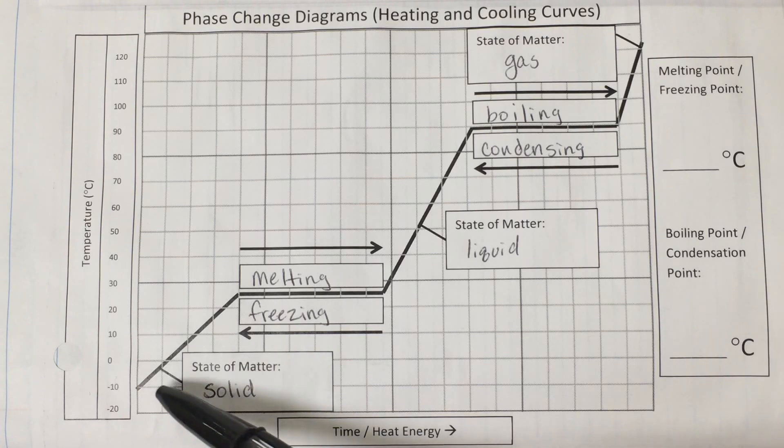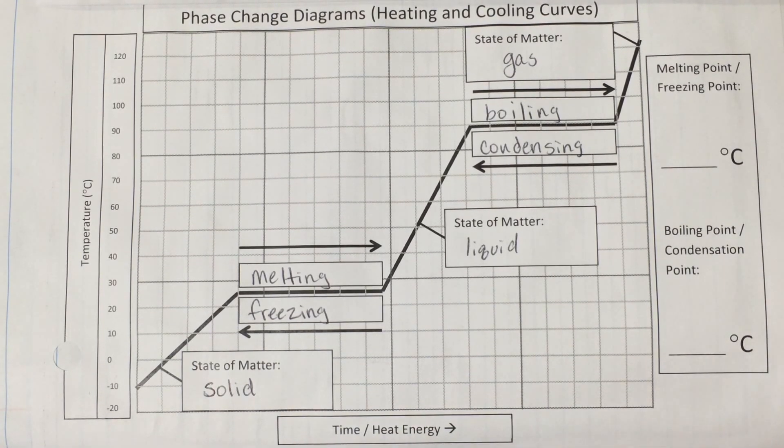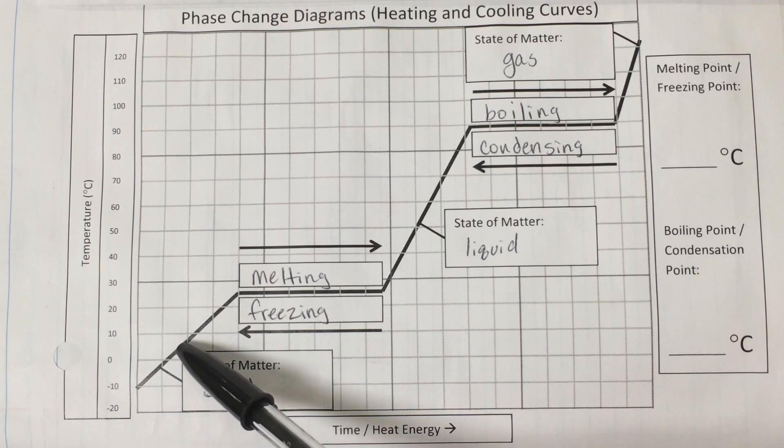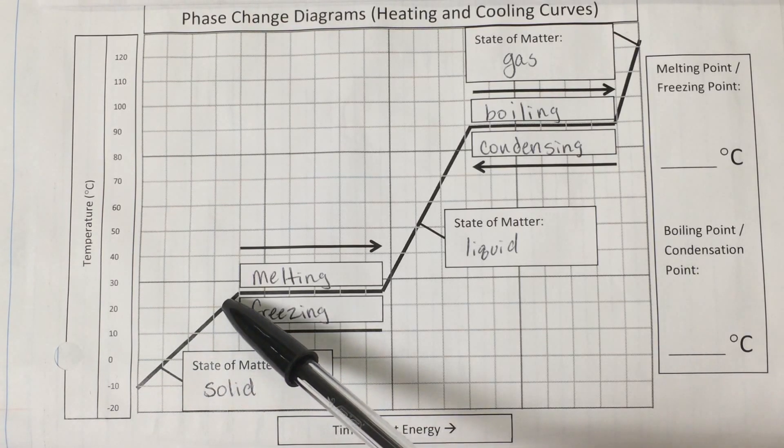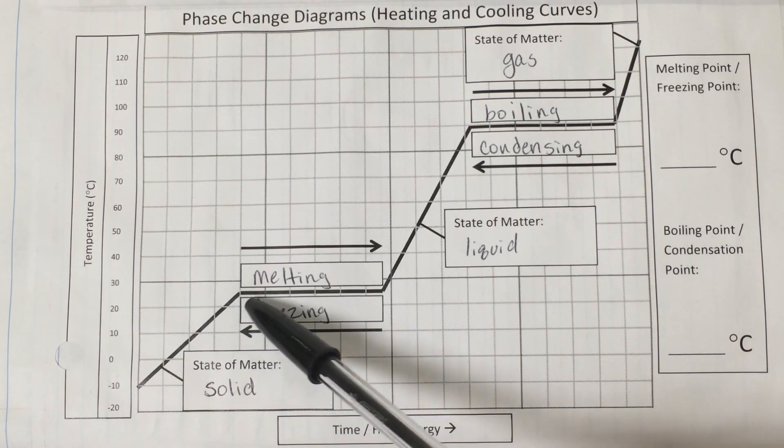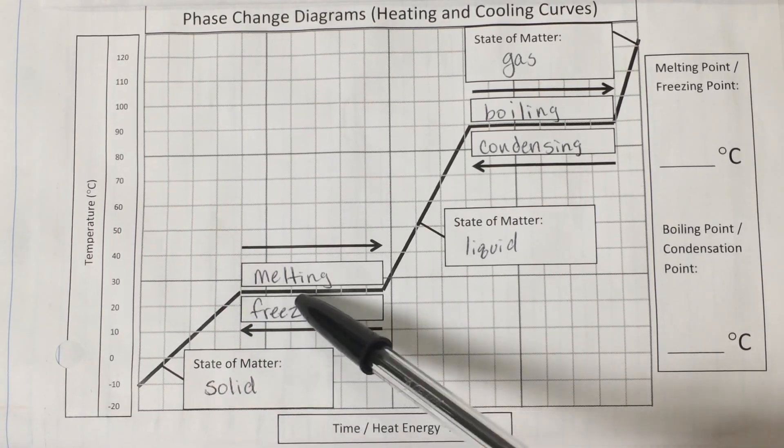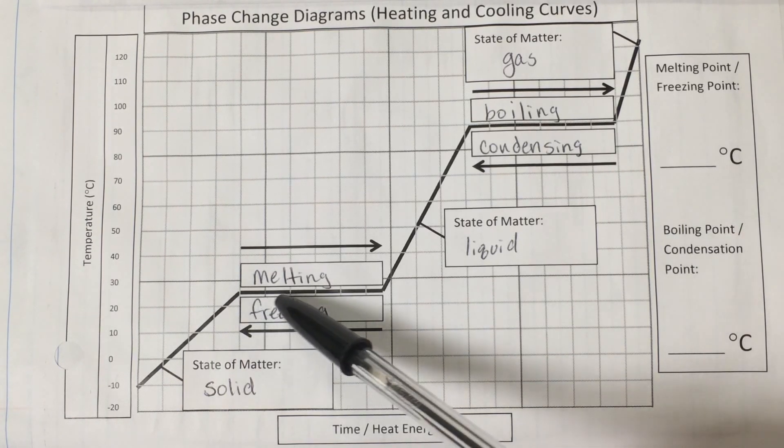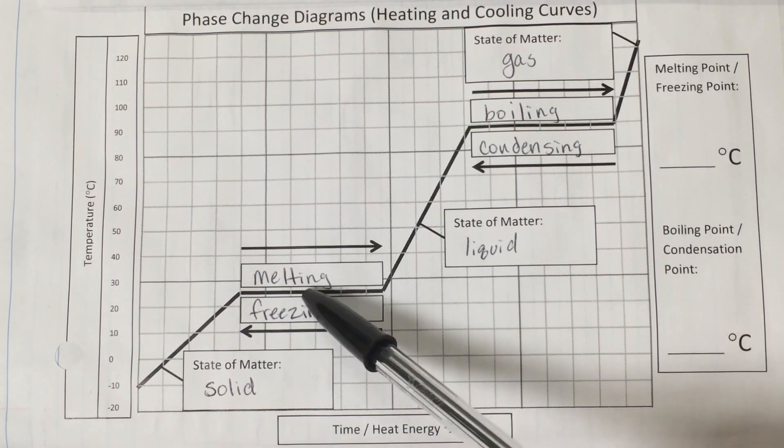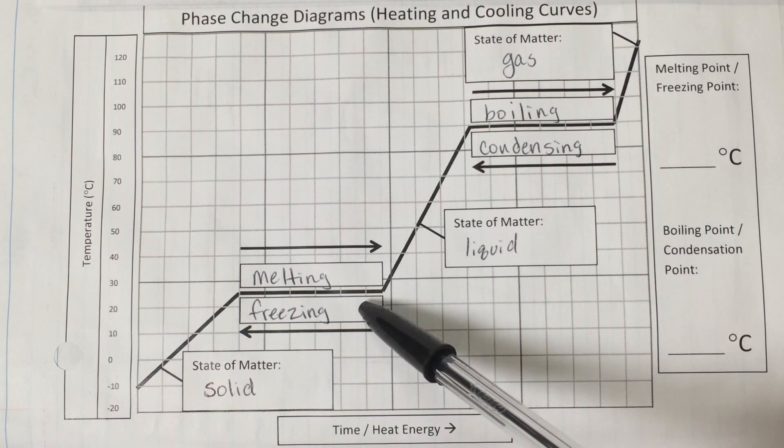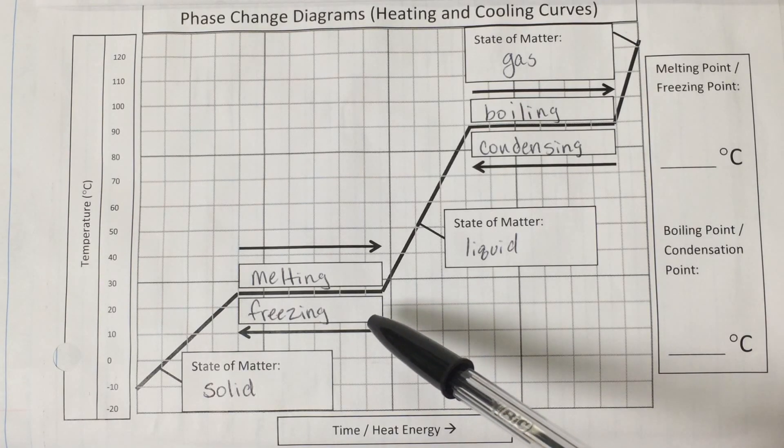So we start down here with the solid, and we can add energy into this system, we add heat energy in over time, and the temperature of that solid will increase until it reaches a point that it begins to melt, which in this case would be this temperature right here. And at the point that the solid starts to melt, and it begins this phase transition, you'll notice that the temperature remains constant, and we saw this in the lab as well.